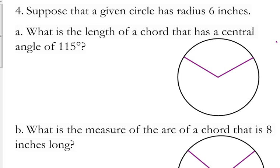So let's answer some questions using this idea. We are given a circle that has a radius of 6 inches. We're going to use that piece of information for all the following problems. In addition to that, for part A, the question is, what is the length of a chord that has a central angle of 115 degrees?